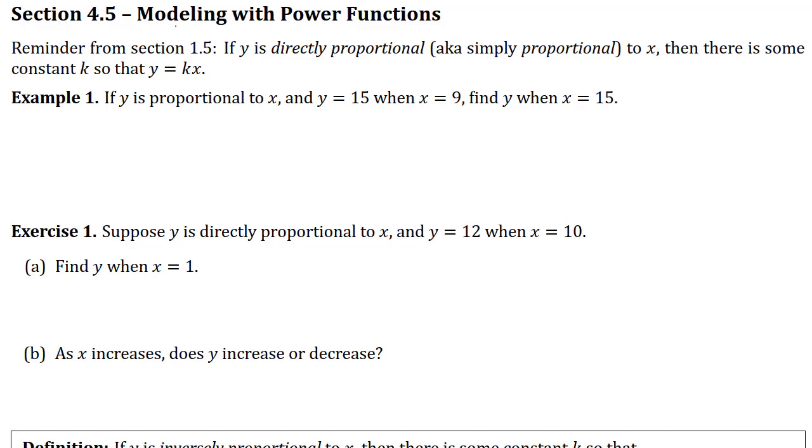We talked about proportions in section 1.5 and this was the basic definition. If y is directly proportional, or simply proportional, to x, then there is some constant k so that y is always equal to k times x. It might be y equals 3x or y equals 0.2 times x. As long as it's y equals a number times x, then you're talking about a direct proportion.